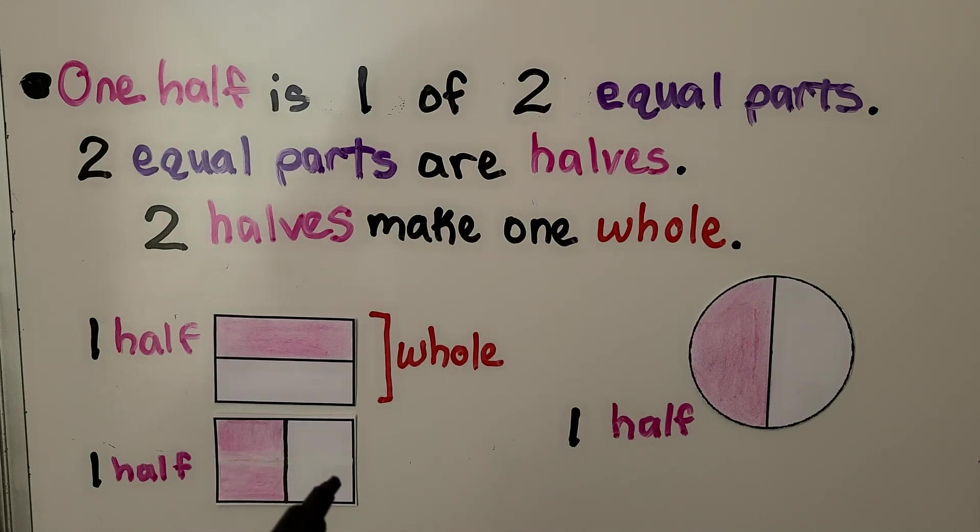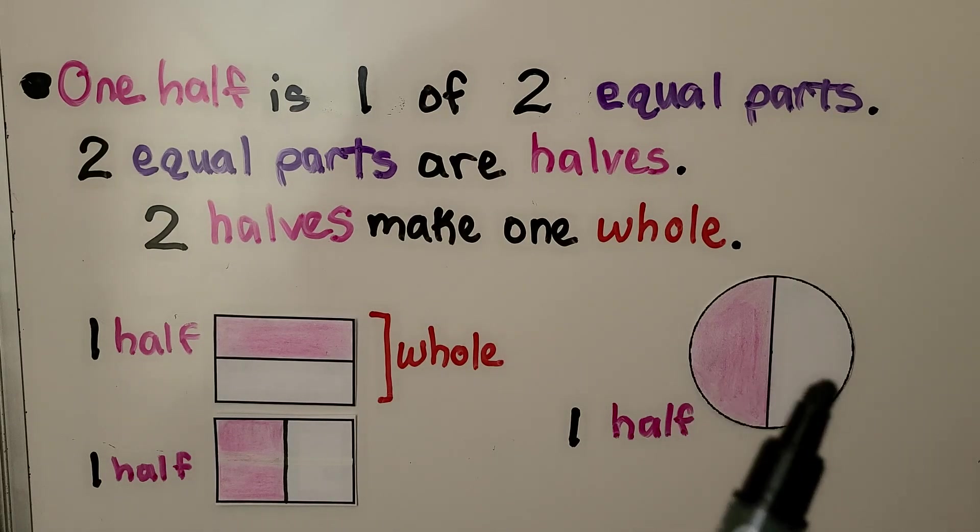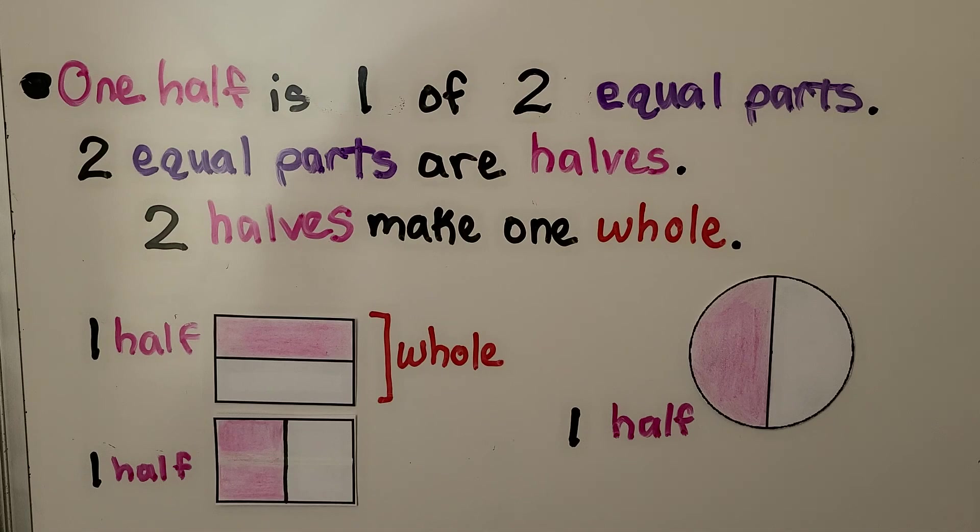Here we have half, here we have half, two halves make one whole. Even for this circle, we have half here, we have half here, it makes one whole circle.